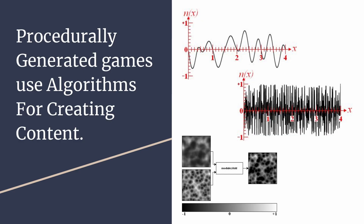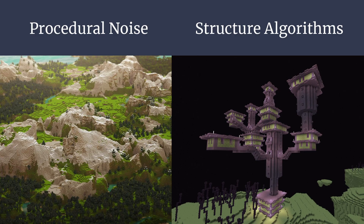Procedurally generated games rely heavily on coherent noise for generating their landscapes and terrain features. However, when more structured outcomes are desired, more constrained algorithms are typically used to produce more predictable results.